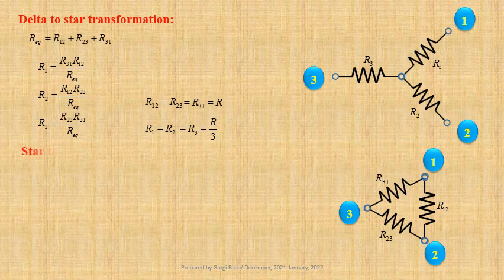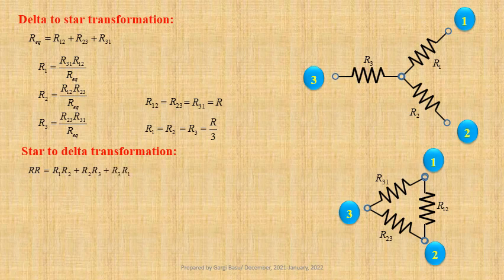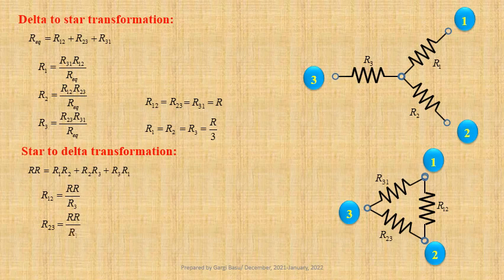For star to delta transformation, we shall first calculate Rr equals R1 times R2 plus R2 times R3 plus R3 times R1. Then we use the relations: R12 equals Rr divided by R3, R23 equals Rr divided by R1, and R31 equals Rr divided by R2.